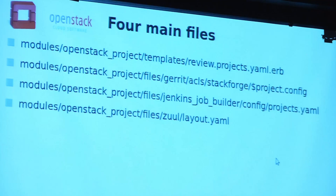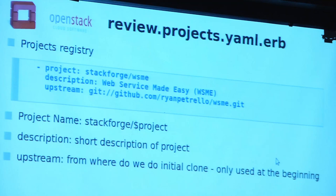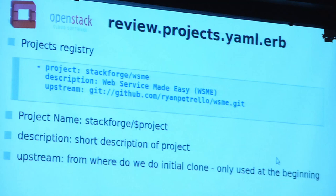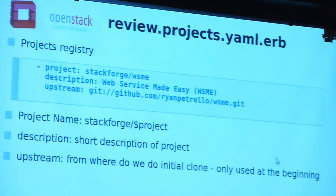The first one is review.projects.yaml.erb — it's a Puppet repo but ignore that, there's nothing ERB-ish you need to know about. This file is the projects registry: it lists every project in our system and drives automation around project creation. Basically three things you need to put in an entry: the name of your project, which needs to start with 'stackforge/', then a short description, then where to get the project from if it already exists — a lot of times people push initial commits to GitHub and we'll suck it down. We use that one and only one time for initial import.